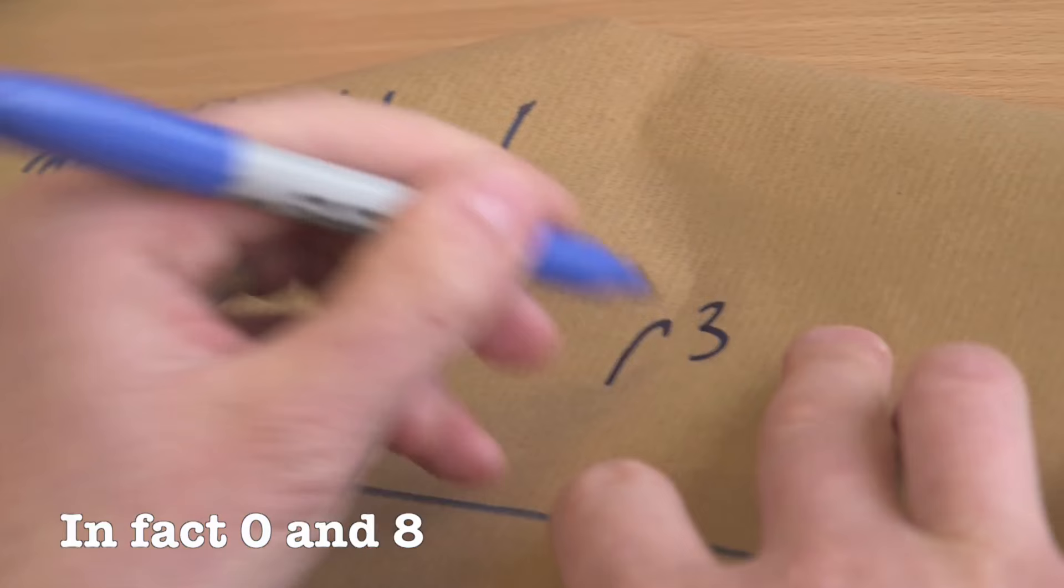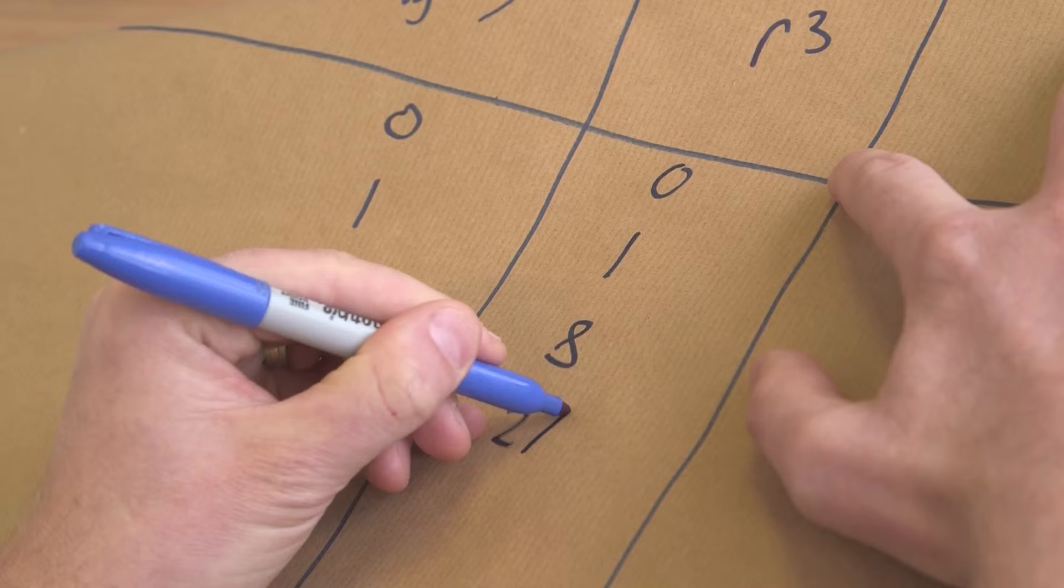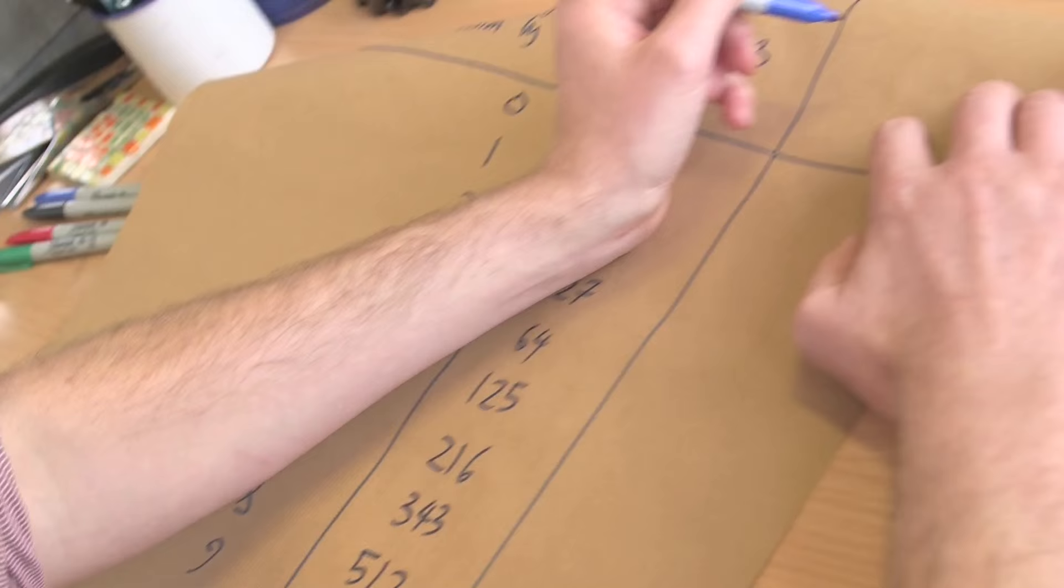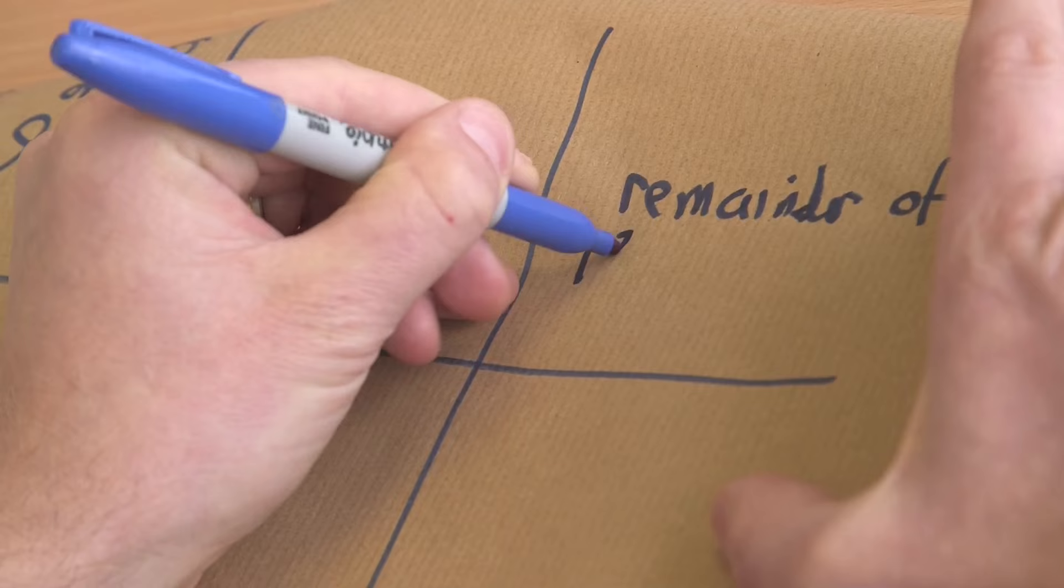Now let's just cube those numbers: 0, 1 cubed is 1, 2 cubed is 8, then 27, 64, 125, and so on up through 512.